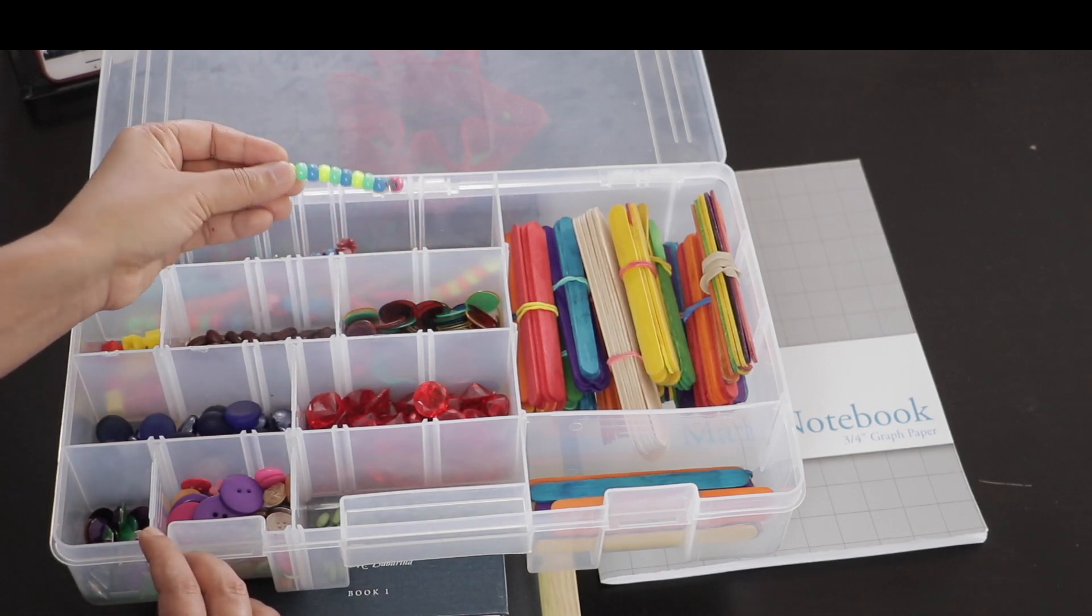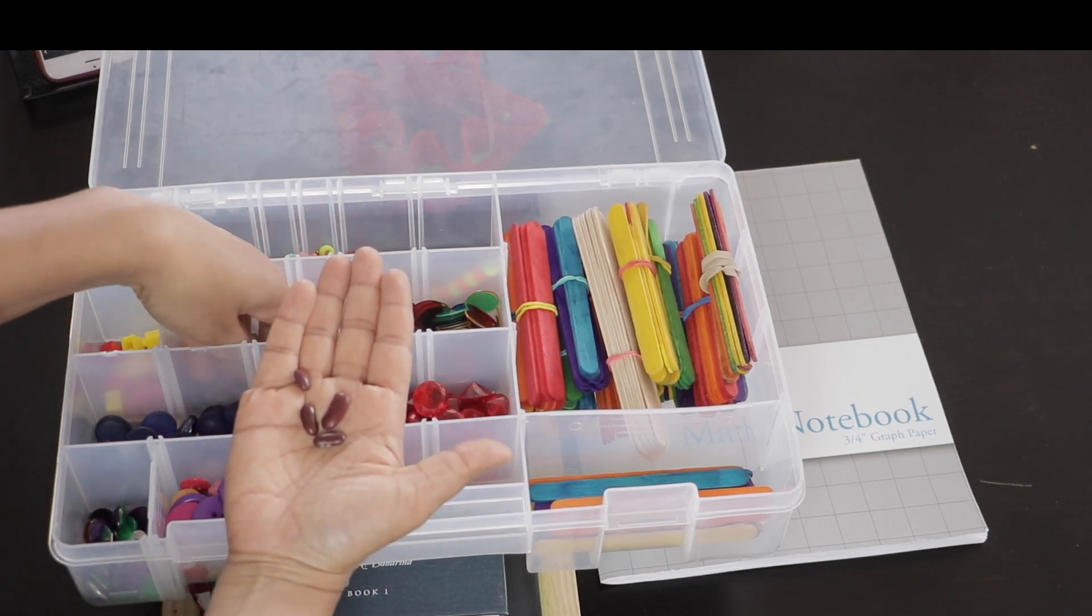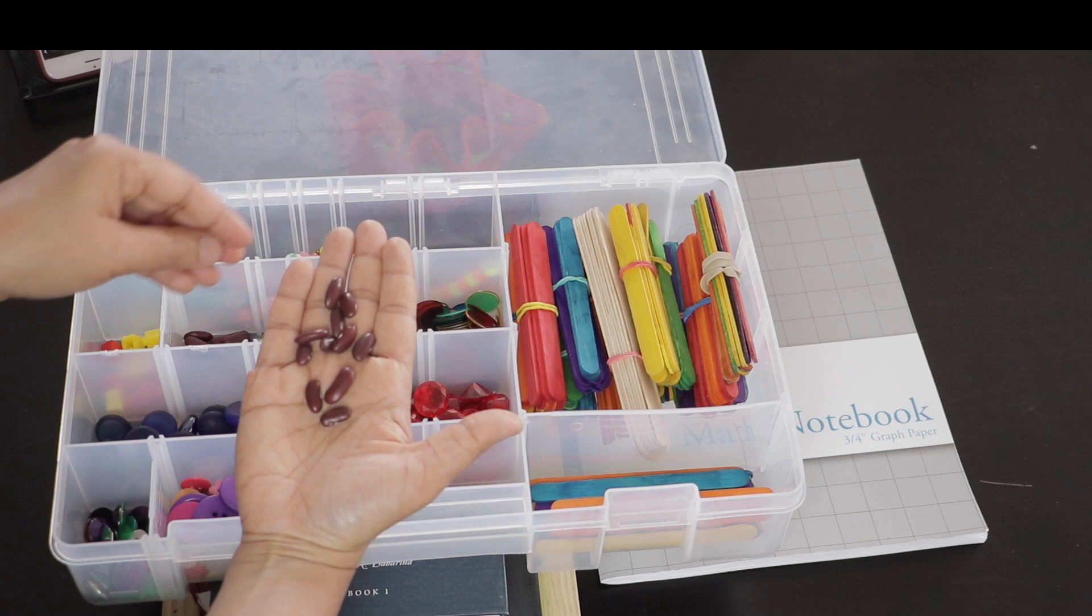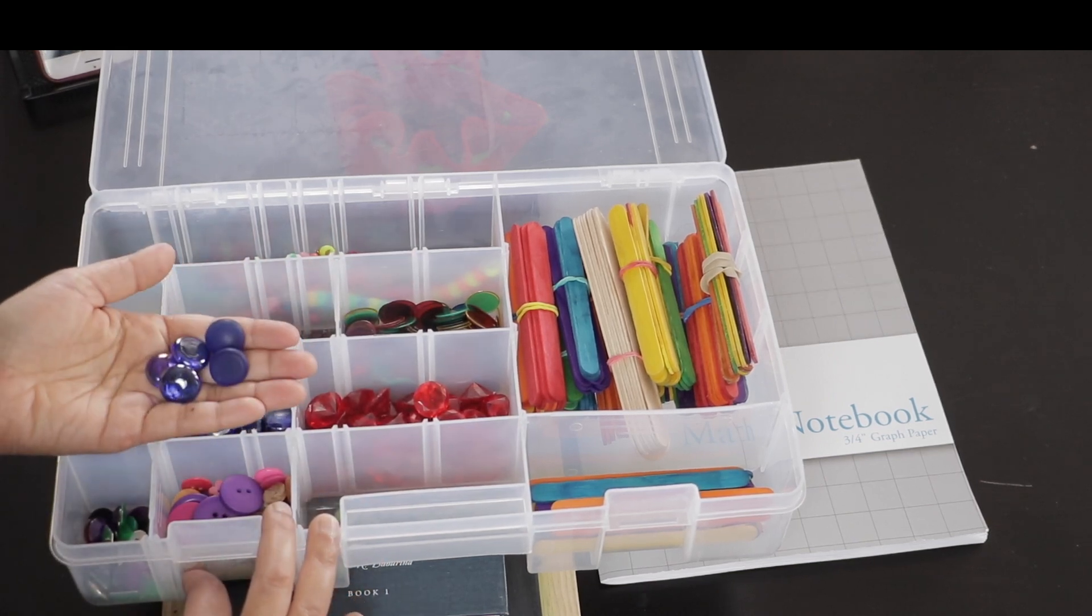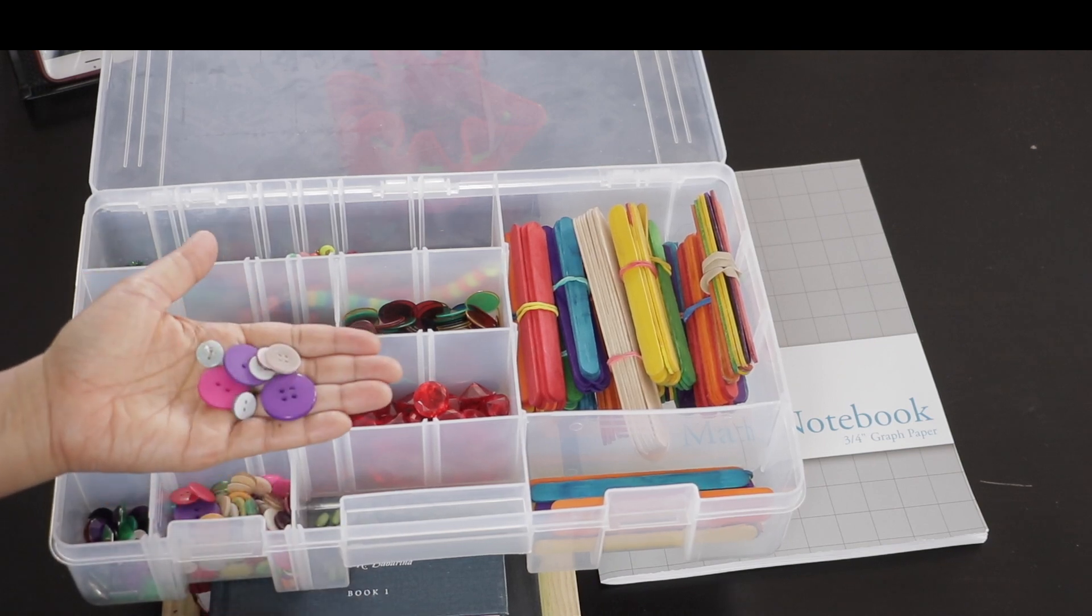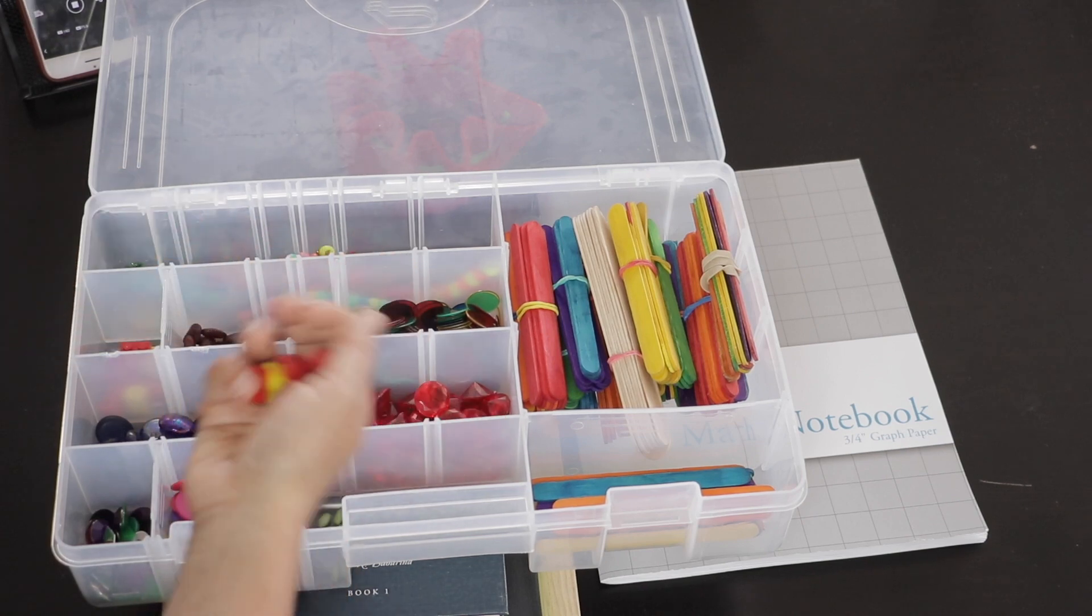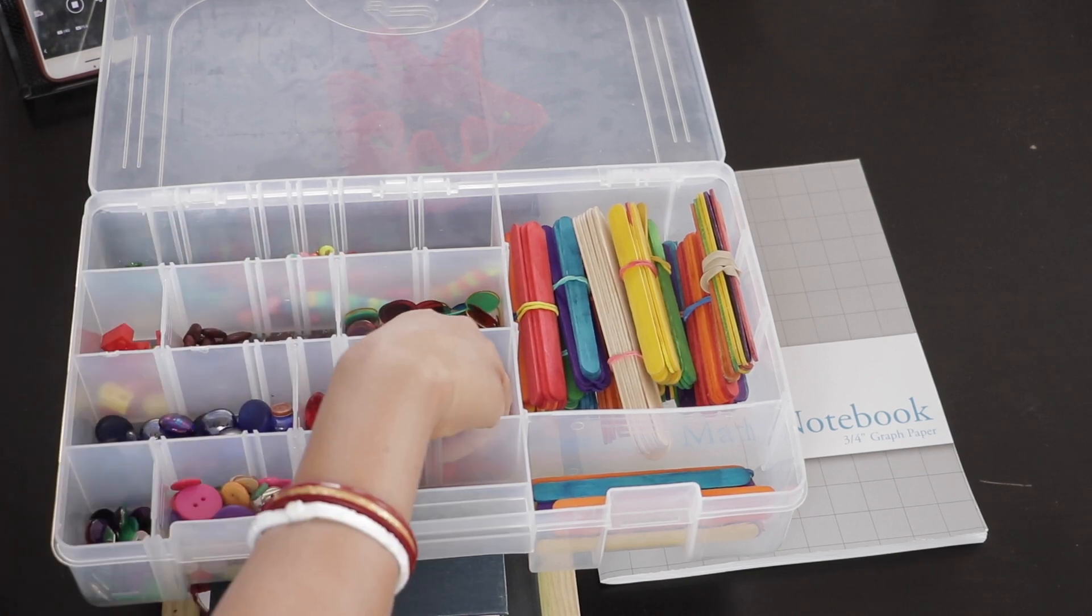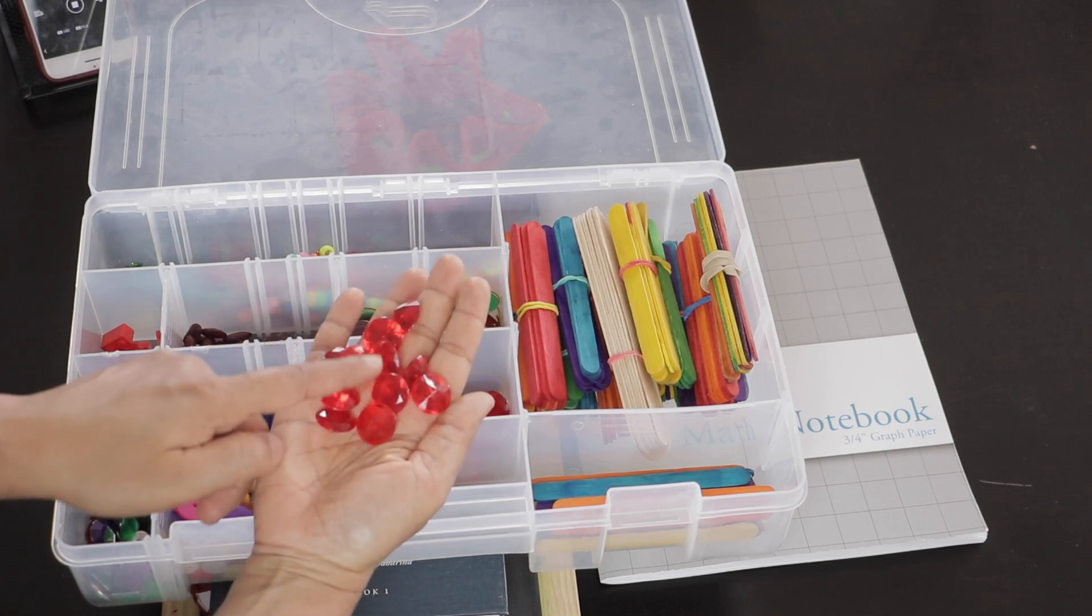I also have some other household objects for counting. Here I have some kidney beans which are always in my kitchen. I just put them in the manipulative box. Pebbles, some buttons, some of my son's spare Legos, and some fake jewels.